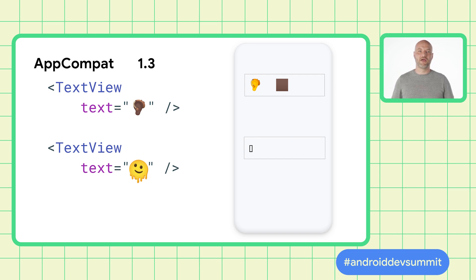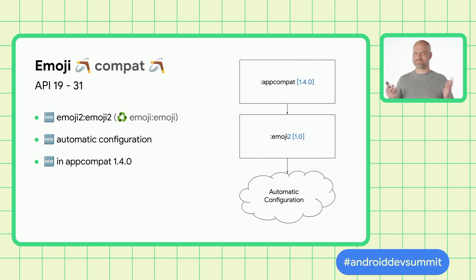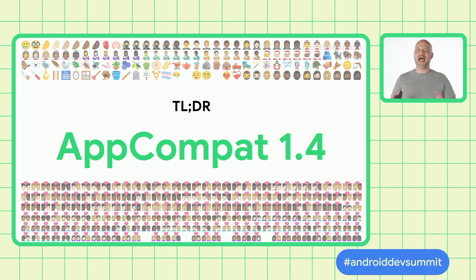So in AppCompat 1.4, we incorporated EmojiCompat into AppCompat. Out of the box, all apps using AppCompat 1.4 will support modern emoji. To do this, we introduced a new artifact — AndroidX.emoji2 — added automatic configuration so it can configure itself to load the correct emoji font, and integrated it into AppCompat 1.4. Just bump your AppCompat version to 1.4 and you'll display modern emoji on API 19 and above. You don't have to configure it or do anything — it'll all just work out of the box.